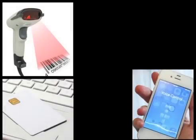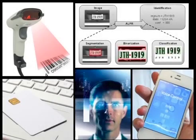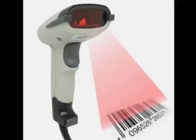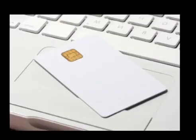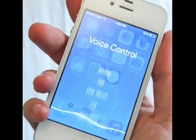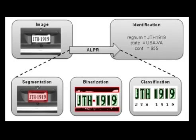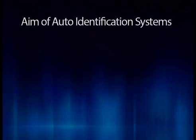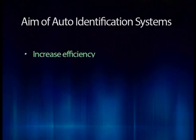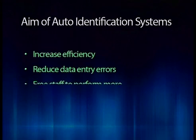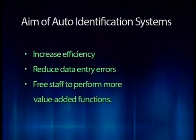Other technologies that fall under the auto-identification umbrella include barcodes, smart cards, voice recognition, and some biometric technologies such as retinal scans and optical character recognition. The aim of most auto-identification systems is to increase efficiency, reduce data entry errors, and free staff to perform more value-added functions.